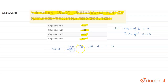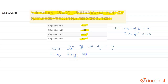At T = 0: A is 2X, B is X, and products C and D are 0. Now let Y moles of A react. At equilibrium, A becomes 2X − Y. For B, since its stoichiometric coefficient is 3, B becomes X − 3Y.